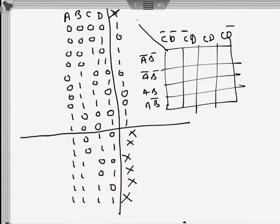This is a video talking about don't care conditions in a truth table and in a K-map. I did a similar video before but I want to do it again. This one has a four-variable truth table with variables a, b, c, d and x as the output.